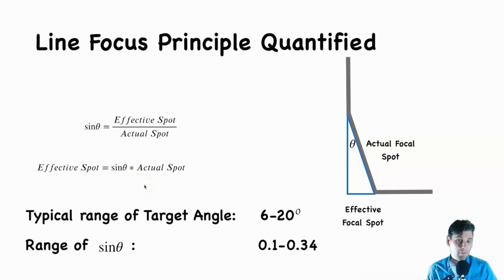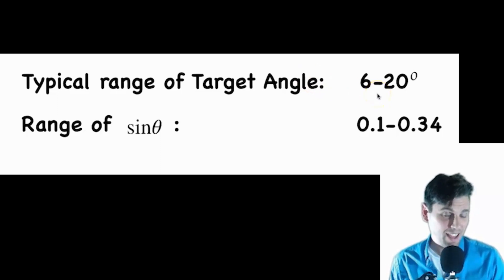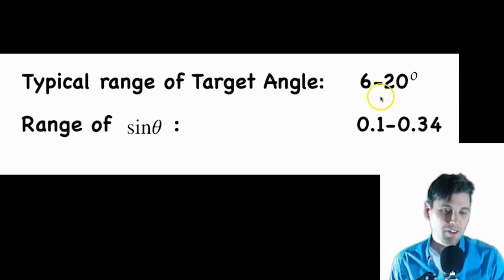What does that mean in practice? The actual angles are typically small, such that we can take good advantage of this effect. In practice, tube angles are typically between 6 and 20 degrees for an x-ray tube. So if you do it in radians, theta is very similar to sine of theta, but you can also just type in sine of theta in your calculator if you're doing it in degrees. The sine of theta is between 0.1 and 0.34.